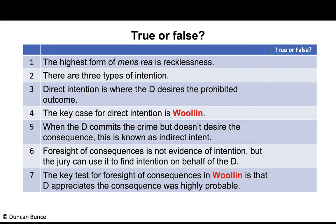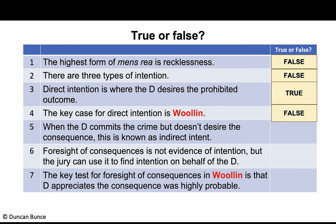Quick true/false recap: the highest form of mens rea is recklessness — false, it is intention. There are three types of intention — false, there are two: direct and oblique. Direct intention is whether the defendant desires the prohibited outcome — true. The key case for direct intention is Woollen — false, the case is Mohan.